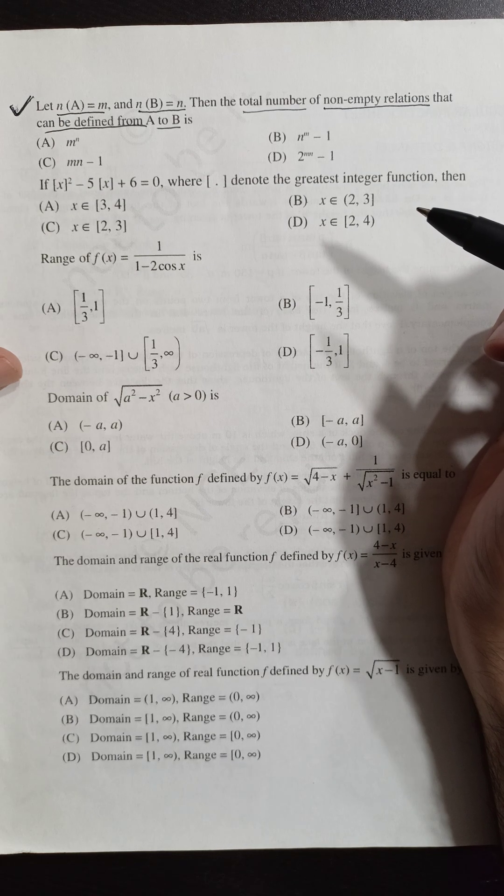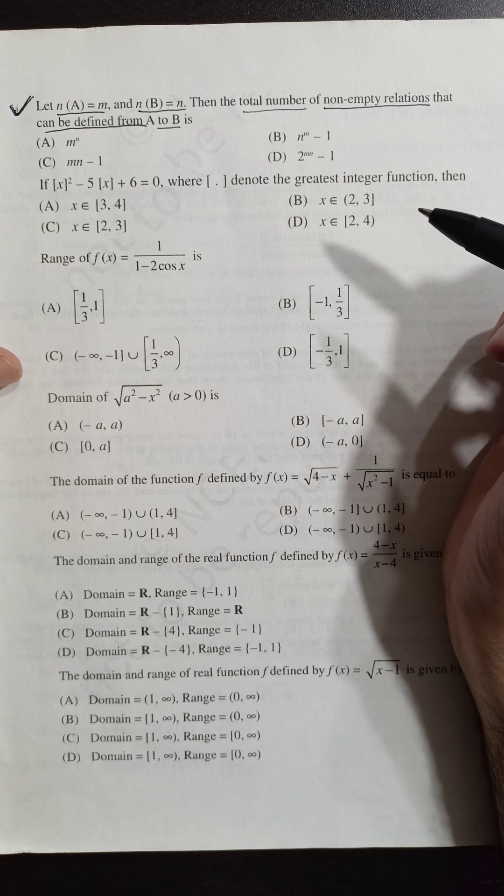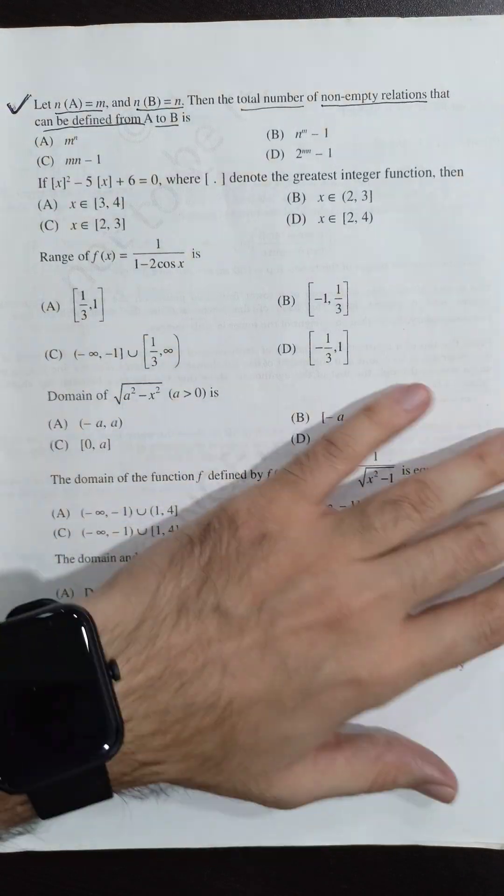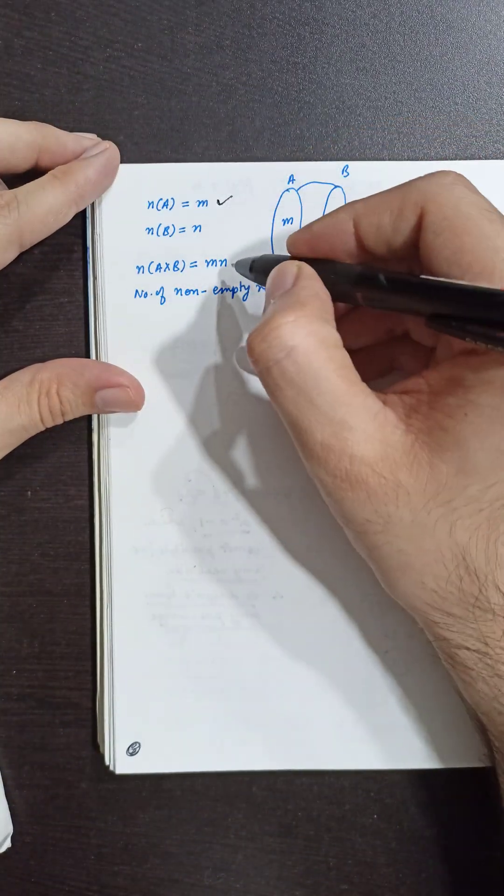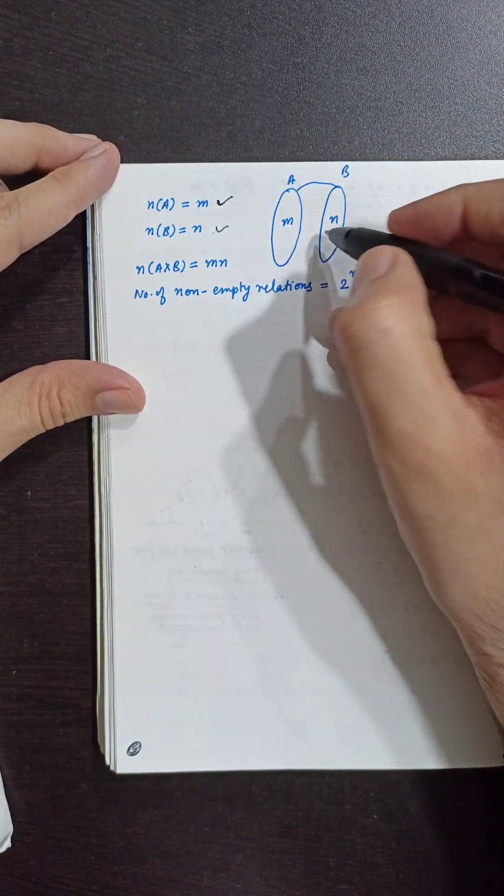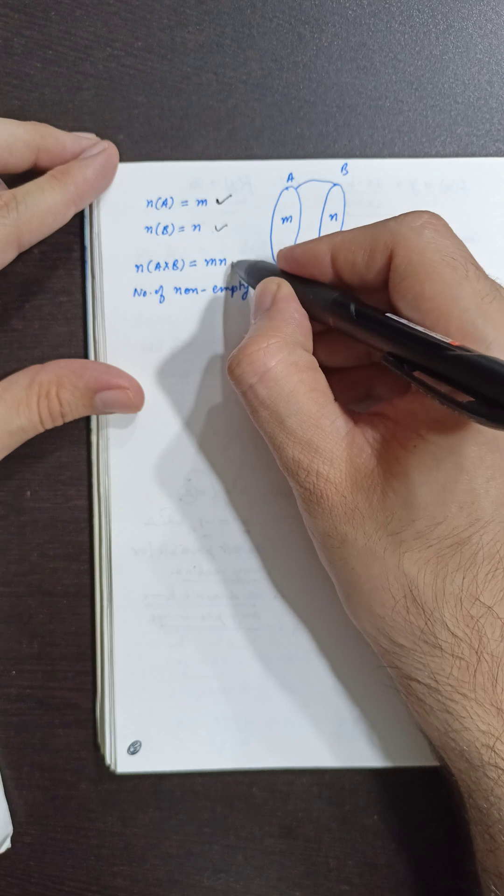So a relation is a subset of the Cartesian product of two sets. For A and B, the Cartesian product - if set A has M elements and set B has N elements, then A cross B will have MN elements.